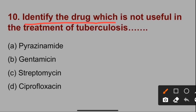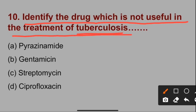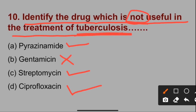Next question: Which of the following is not useful in treatment of tuberculosis? Option A is pyrazinamide — used in tuberculosis. Option B is gentamicin — not used in tuberculosis; it is an aminoglycoside antibiotic. Streptomycin is also used in tuberculosis treatment. Ciprofloxacin is also used in tuberculosis treatment. So the drug not useful in tuberculosis is gentamicin — option B is correct.